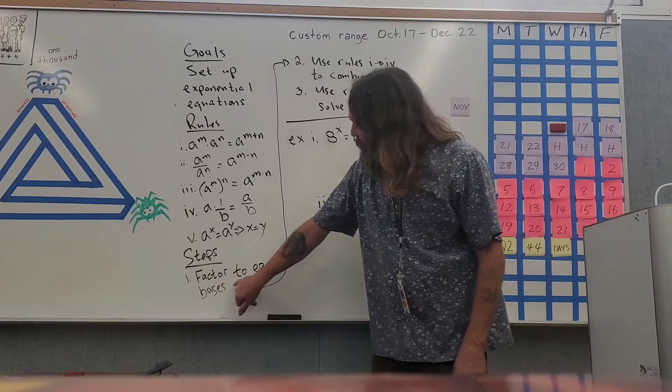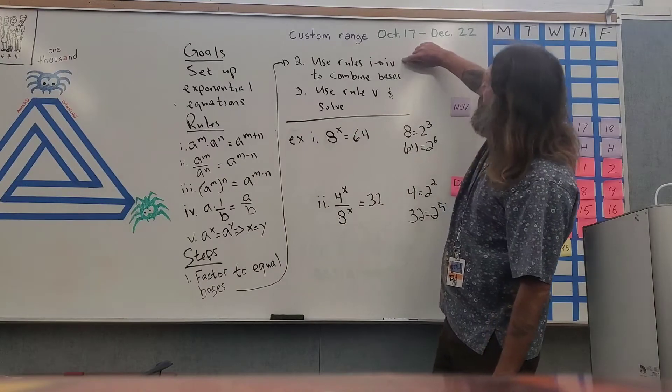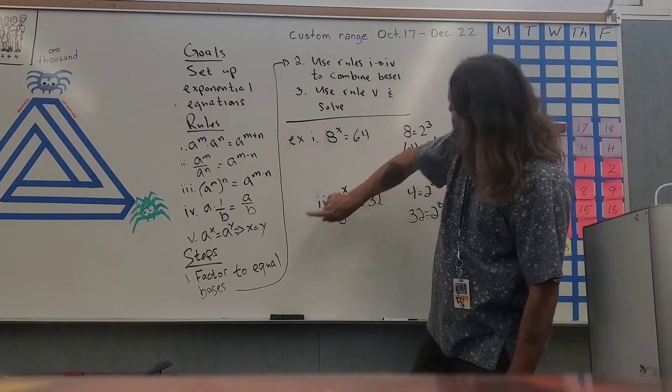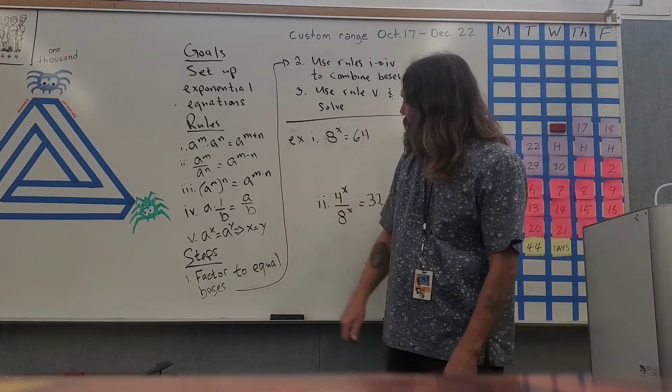All right, the steps. First, we're going to factor to equal bases, so we get to step five. Second, we're going to use rules one through four to combine the bases because we want one base on each side of the equal sign. And finally, we're going to use rule five to solve.